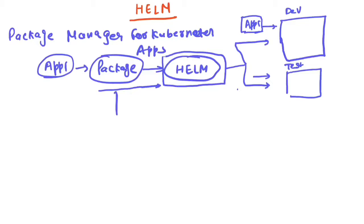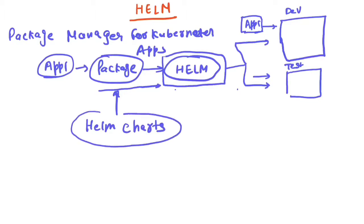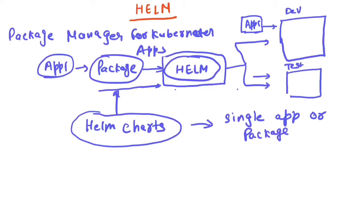Each package that you upload to Helm is called a Helm chart. A Helm chart is similar to a single app or a single package available inside Helm — you can think of it as a single set of app or package instructions which you can use to get deployed onto a Kubernetes cluster.